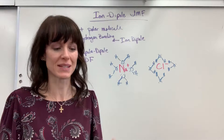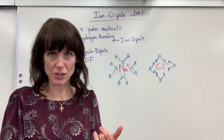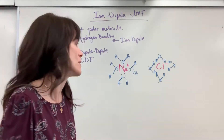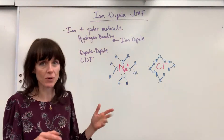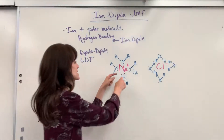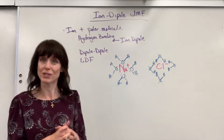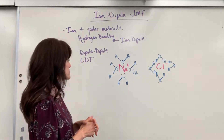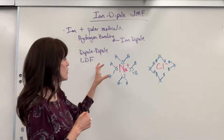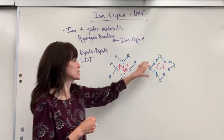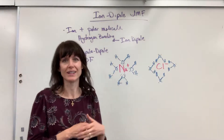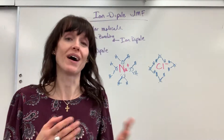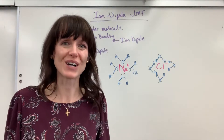Water is an extremely polar molecule because it has hydrogen bonding, dipole-dipole, and London dispersion forces. It's a very polar molecule — it does not equally distribute or share electrons. Notice how the water surrounds those ions. This is also the solvation process — it's the process of dissolving.